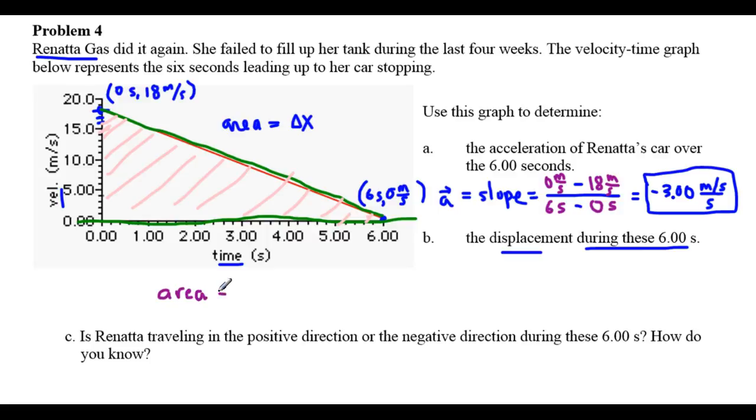Area of a triangle is one-half base height. And that area, one-half base height, gives us the displacement. If you wanted, you could find just the area for the first two seconds. You could use the rhombus formula and find that area, and then you would have her displacement during the first two seconds. But we want the displacement during the entire time, so the full triangle, this whole area.